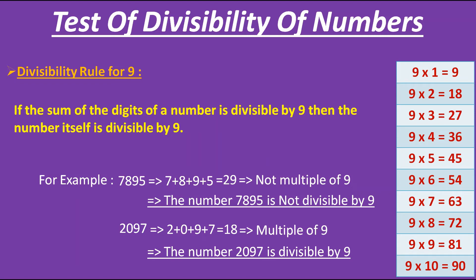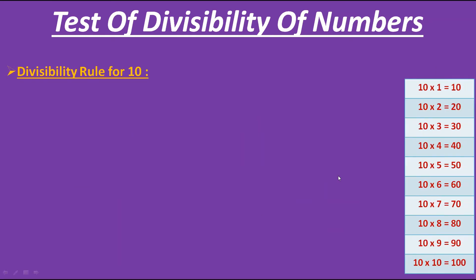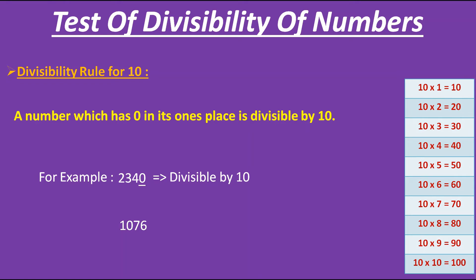Now let's move to the divisibility rule for 10. It's very easy. If you look at the table of 10, all the multiples of 10 have 0 on their unit place. If you extend this, you will again get 0 at the unit place. Therefore, the rule says that a number which has 0 in its unit place is divisible by 10. Here I am taking two examples. In the first number, we have 0 on its unit place. Therefore, the number 2340 is divisible by 10. But in the second number, we have 6 on its unit place, not 0. Therefore, the number 1076 is not divisible by 10.